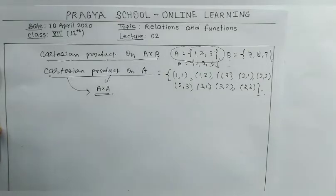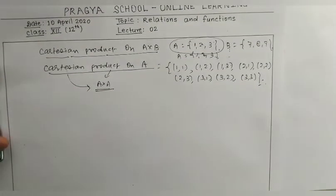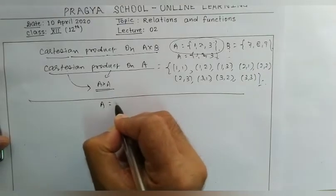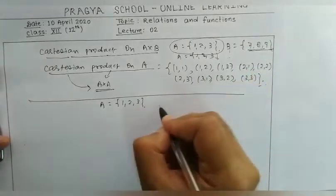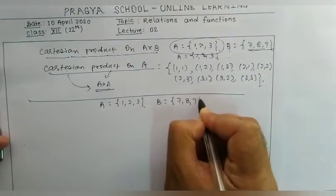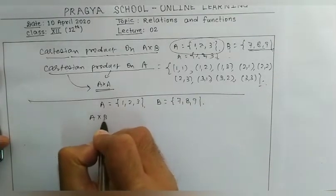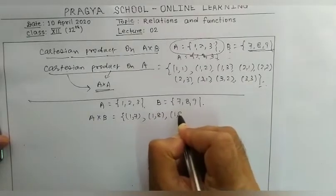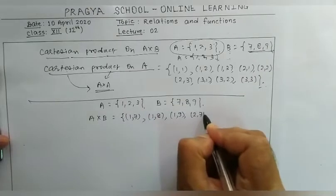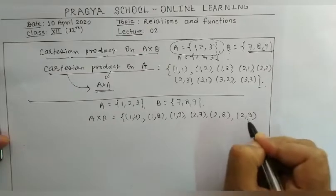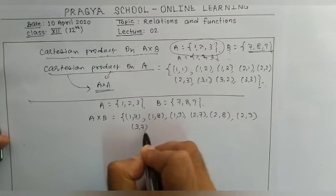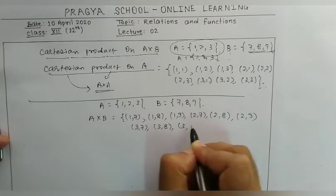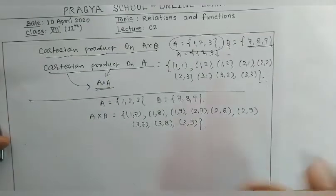I hope the basic concept of Cartesian product and subsets is now clear. Now, let's consider again Set A = {1, 2, 3} and B = {7, 8, 9}. Writing A×B: {(1,7), (1,8), (1,9), (2,7), (2,8), (2,9), (3,7), (3,8), (3,9)}. Now we will understand relations.